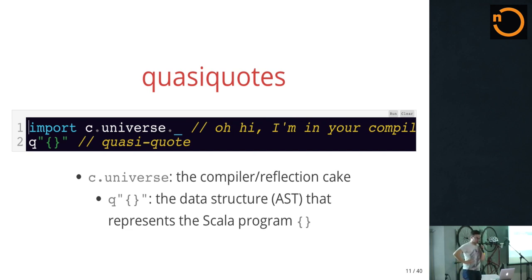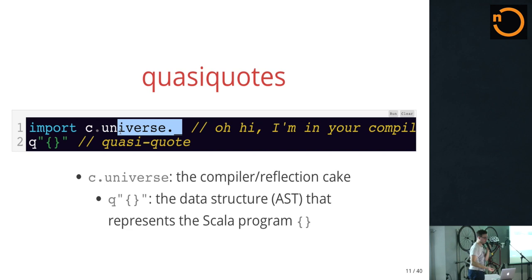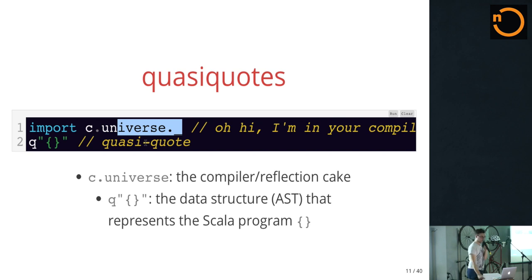When we import the universe — that's called 'global' in the compiler implementation — we're importing all the types defined in there. Tree is an example, or a type or a symbol. And this is a quasi-quote. This is your best friend when you're a macro writer. It lets you construct Scala trees. I'll talk a little more about them later.